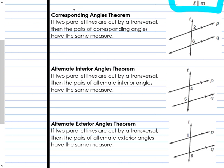The corresponding angles theorem says: if two parallel lines are cut by a transversal, then the pairs of corresponding angles have the same measure — they are congruent to each other. So my corresponding angles 2 and 6 are both on the right side of the transversal and both above their intersected line — they're in corresponding spots. Because the lines are parallel, 2 and 6 are equal to each other; they have the same measure.